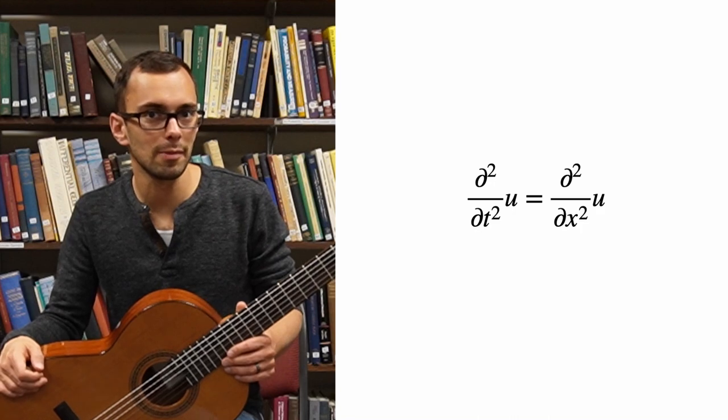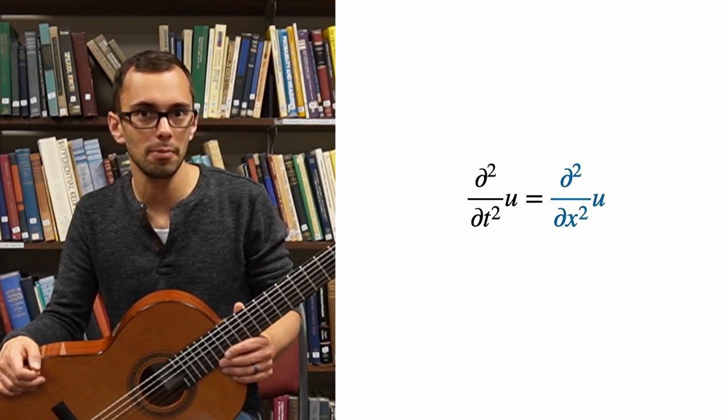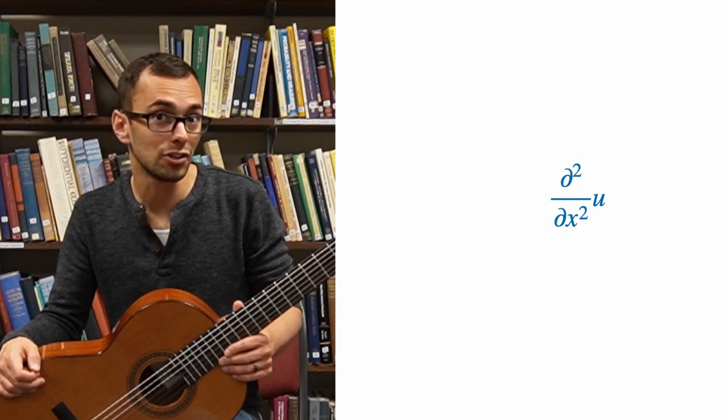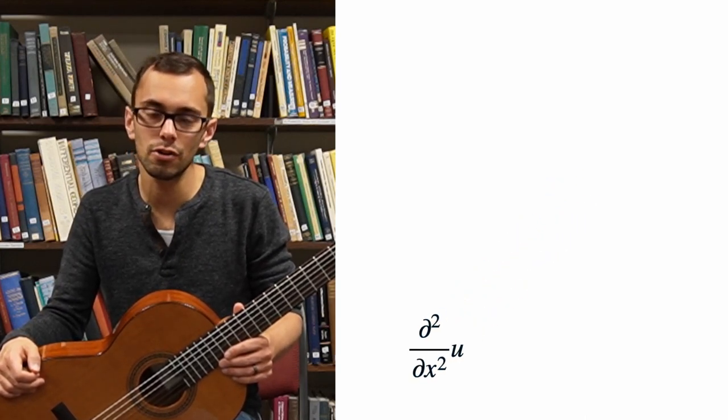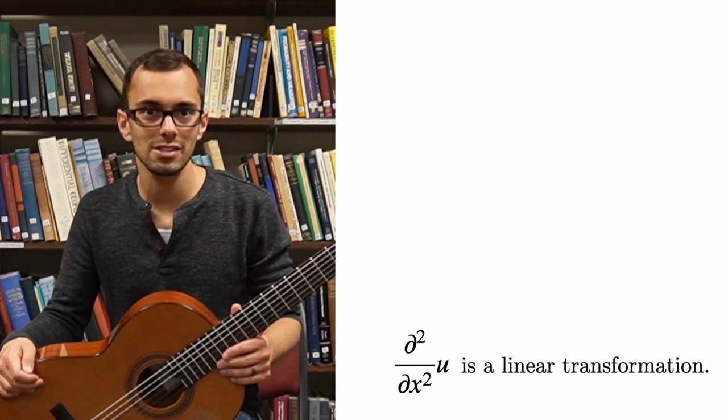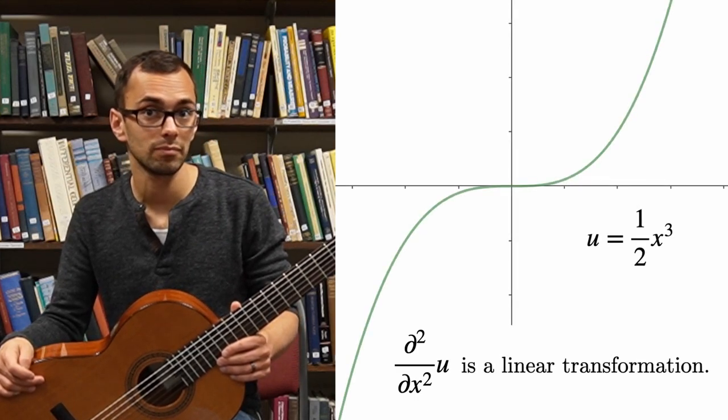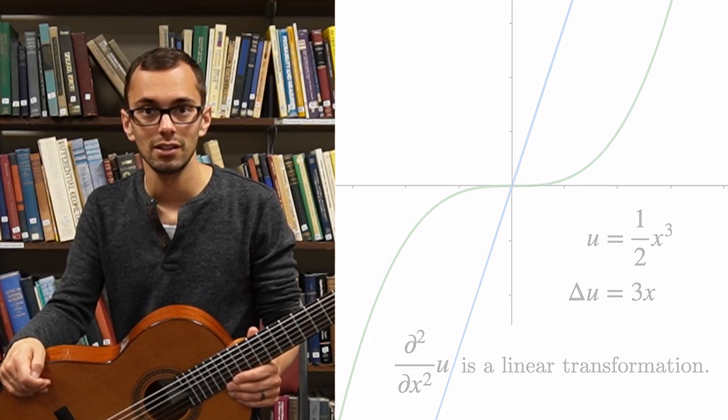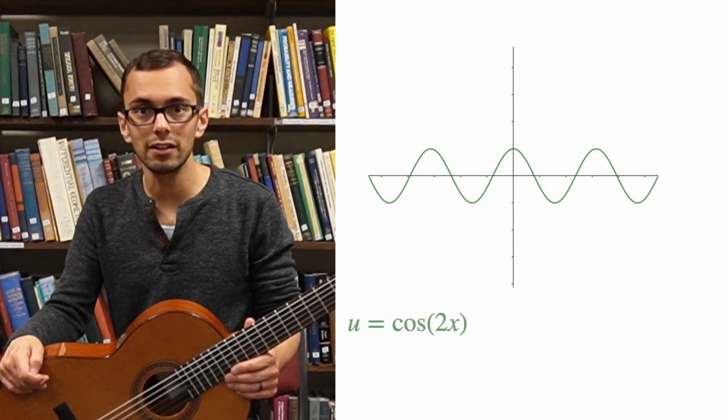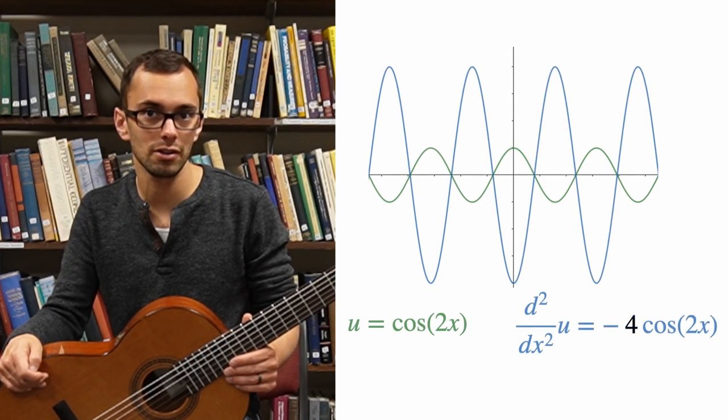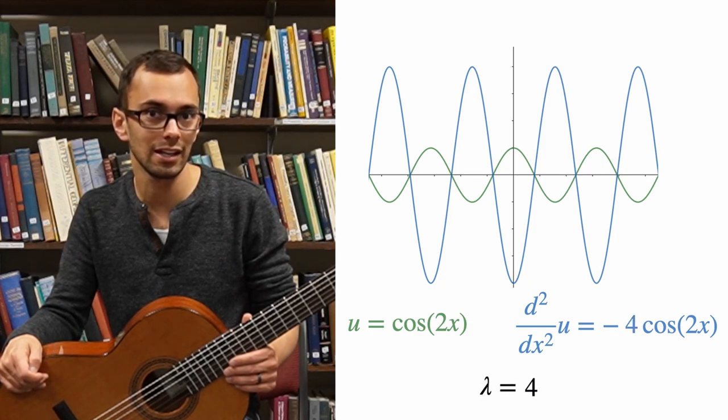It's a considerable jump in abstraction to consider the operator partial derivative with respect to x squared as a linear transformation, because it doesn't correspond to any matrix. However, it is possible to consider this as a linear transformation of functions, which takes the function to its second derivative. In doing so, the eigenfunctions will be functions which satisfy the equation partial squared u partial x squared equals negative lambda u.